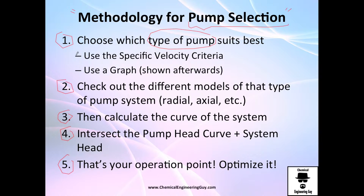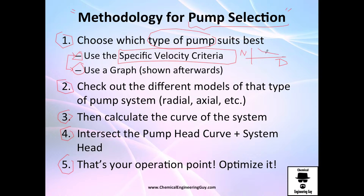There are two common approaches. The first is the specific velocity criteria, which involves analyzing the velocity and diameter of the pump and relating those to choose the best pump from a graph. The second approach is simpler: a graph based on volumetric flow rate and head, where different areas tell you what type of pump to choose.